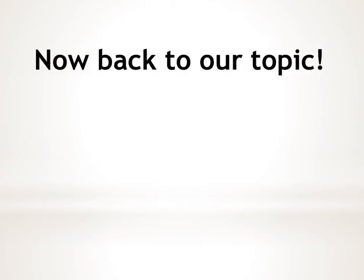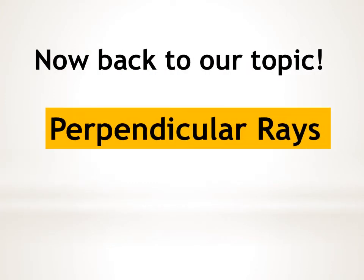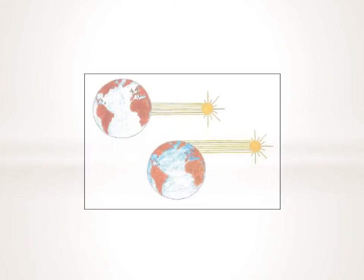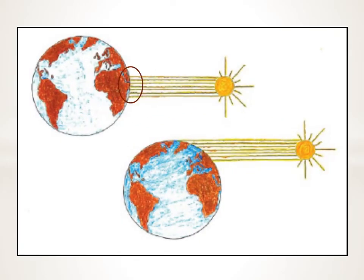Okay, now let's get back to our topic: perpendicular rays and oblique rays. Look at this picture — do you notice the difference? Can you see that oblique rays hit a wider area on the earth's surface?